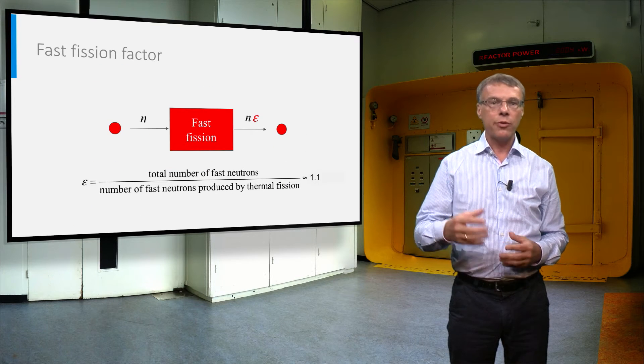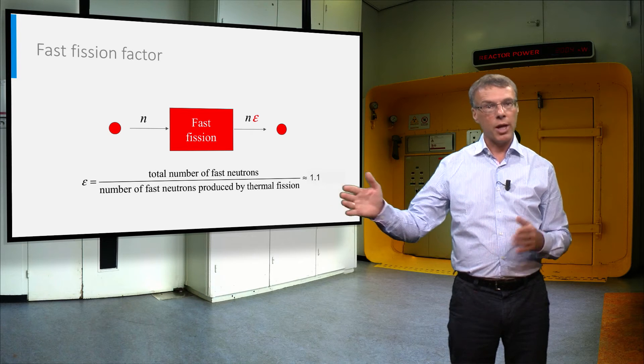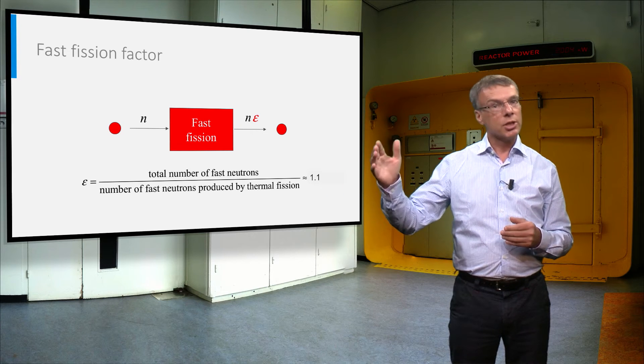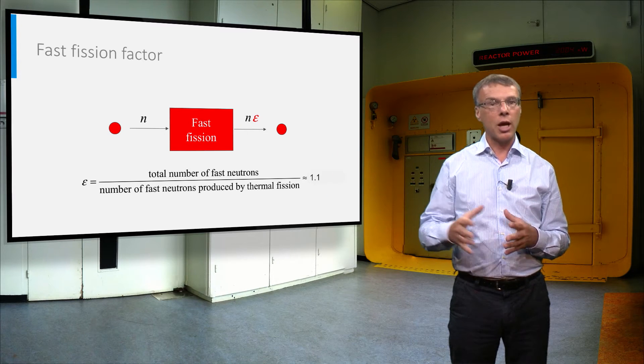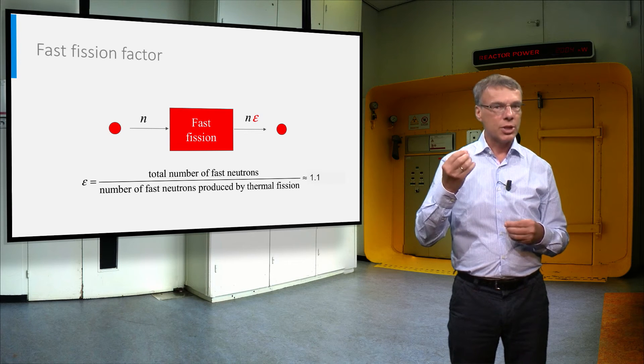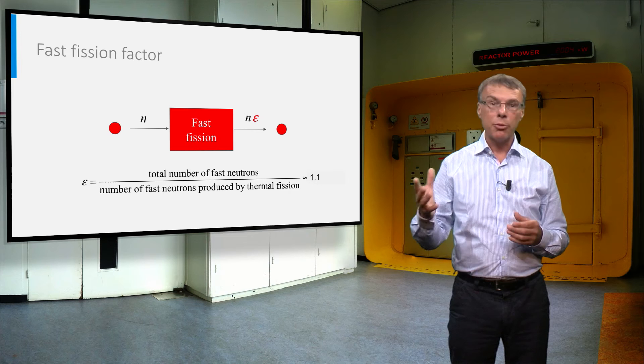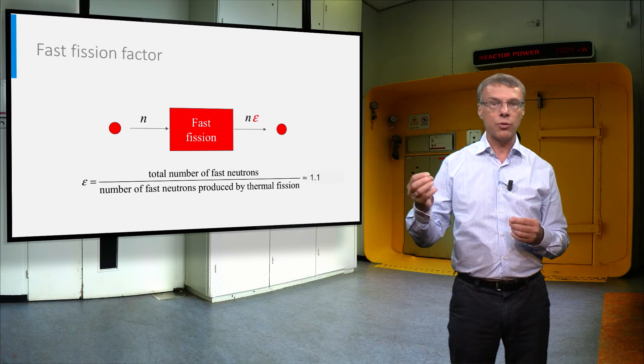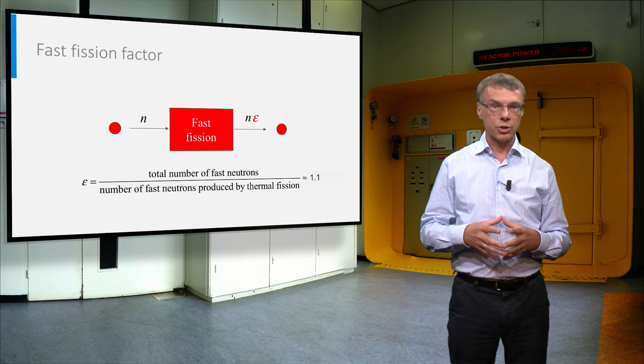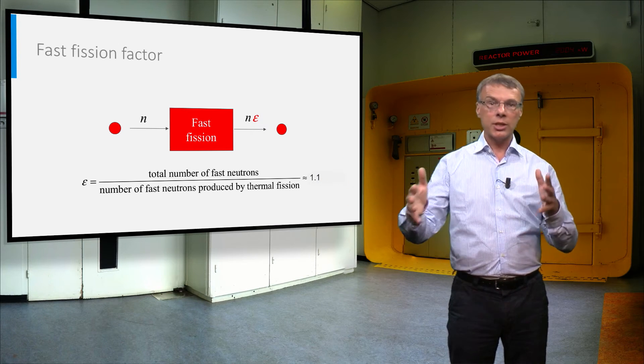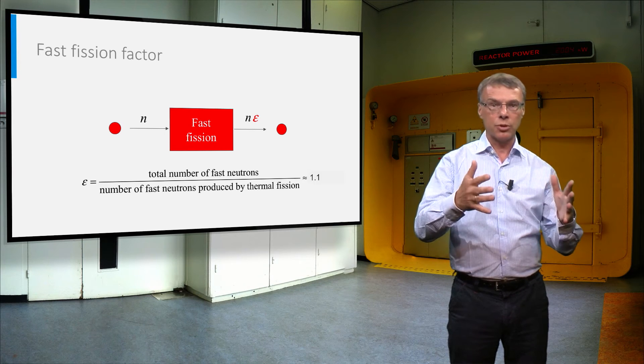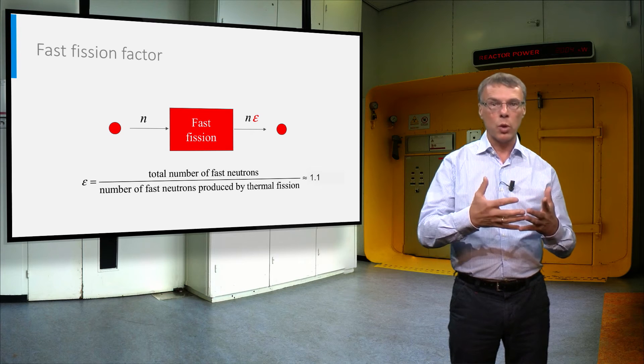We will now follow the fission neutrons in more detail between birth and death. When the neutrons are released at high energy, some of them will be absorbed by uranium-235 or uranium-238. And although the chance is not very high, some of these absorption processes can lead to fission of uranium. In this case, we will gain some neutrons. And if we start with n neutrons, this number will be multiplied by the fast fission factor epsilon, which has a typical value of around 1.1.